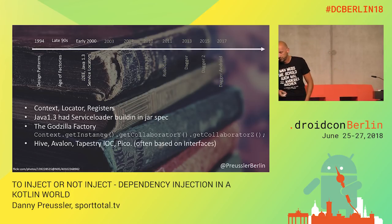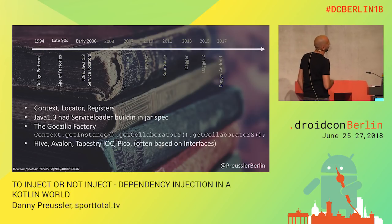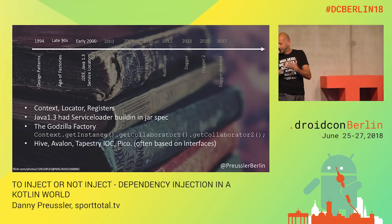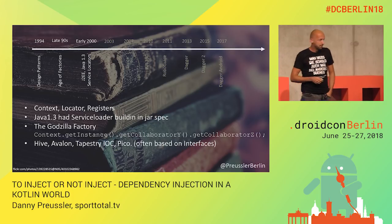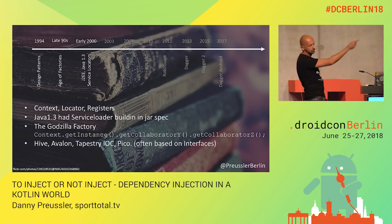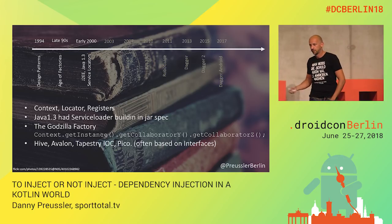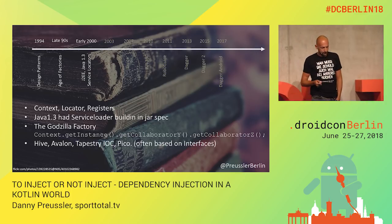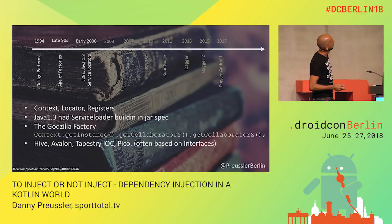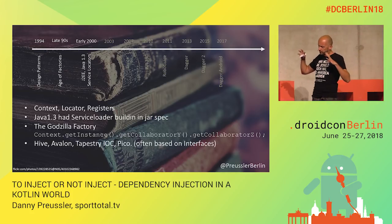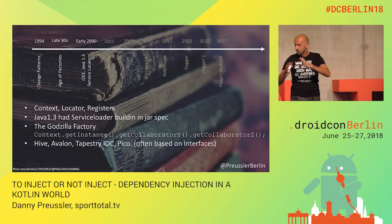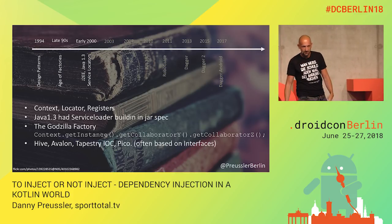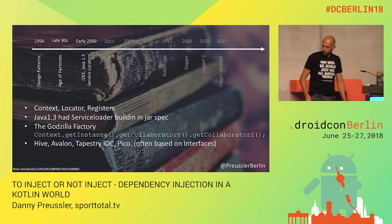In the early 2000s, other patterns came up — things with locators, where the whole service locator thing may have started. People used large Godzilla factory calls — train wrecks violating the law of Demeter. Interestingly, Java 1.3 already let you define in a manifest an implementation and interface, then ask the Service Loader for that class. That was kind of a precursor to what came later.